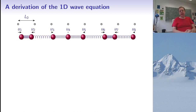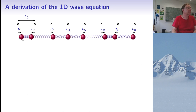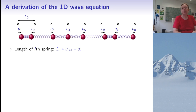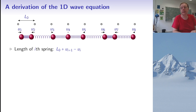Now let me displace the masses a little bit. Ui measures the displacement of the i-th mass, with the convention that Ui is positive if the mass is moved to the right and negative if moved to the left. So U1 will be positive, U2 will be negative. I can now compute the new length of the springs: the length of the i-th spring is L0 plus U(i+1) minus Ui. If U(i+1) and Ui are the same, the spring length doesn't change; if U(i+1) is positive and Ui is negative, the spring becomes longer.